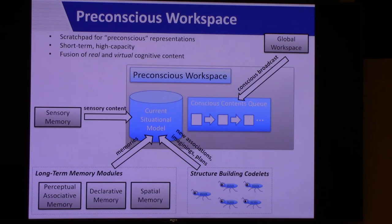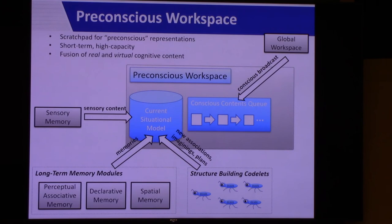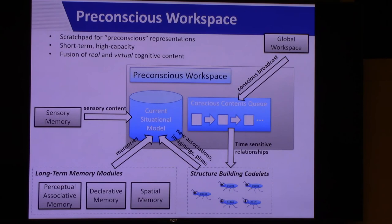The conscious contents queue requires understanding the global workspace, which determines what becomes conscious — the end result being the conscious broadcast. The conscious broadcast is saved in the conscious contents queue for a certain amount of time, building up a subset of recently broadcast content. Structure-building codelets can use this queue to determine time-sensitive relationships between different broadcasts, which may be useful for determining things like causality.